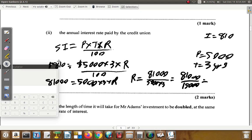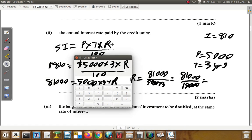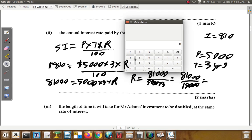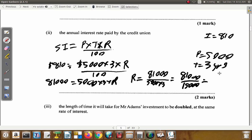$81,000 divided by $15,000 equals 5.4. So the percentage rate is 5.4 percent. That's the annual interest rate paid by the credit union.